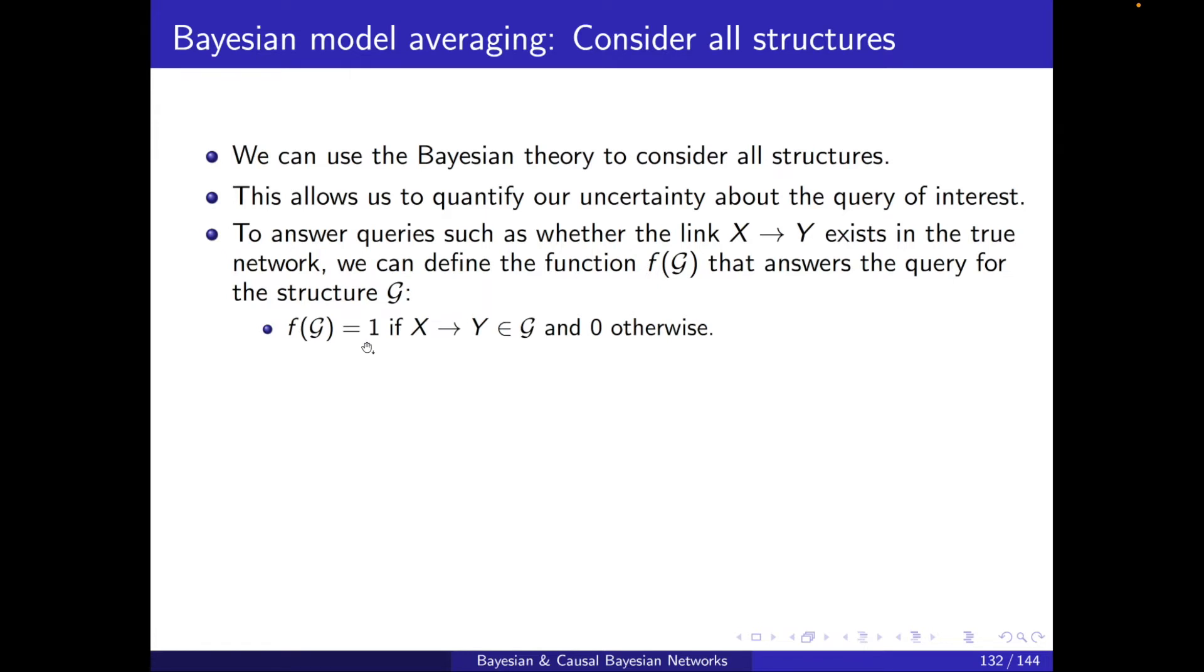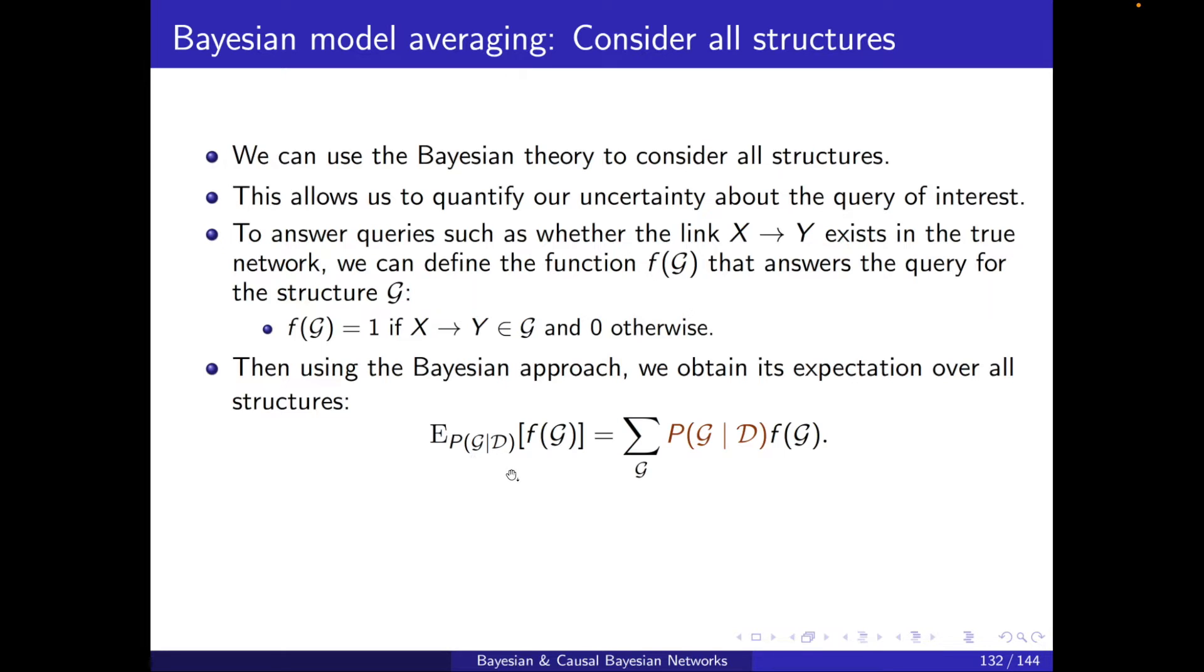we can define the function f(g) that answers the query for the structure g. For example, f(g) equals 1 if the link between x and y belongs to g, and 0 otherwise. Then using the Bayesian approach, we obtain its expectation, the expectation of this f over all structures. The expectation of f with the posterior distribution: summation of f(g) times the posterior distribution over all g.